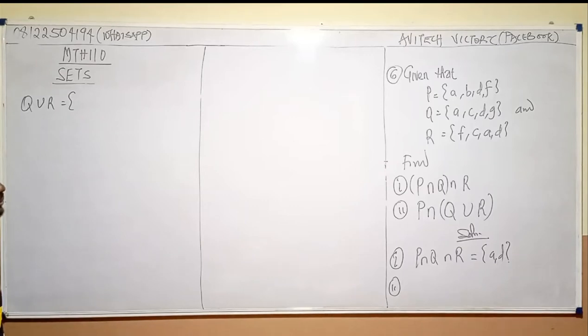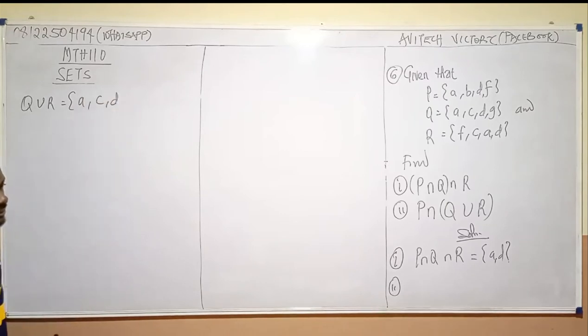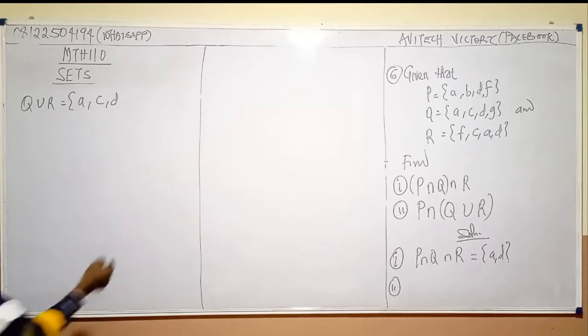But Q union R? Yes. A, C, D. That's why they're intersection. Union means everything.